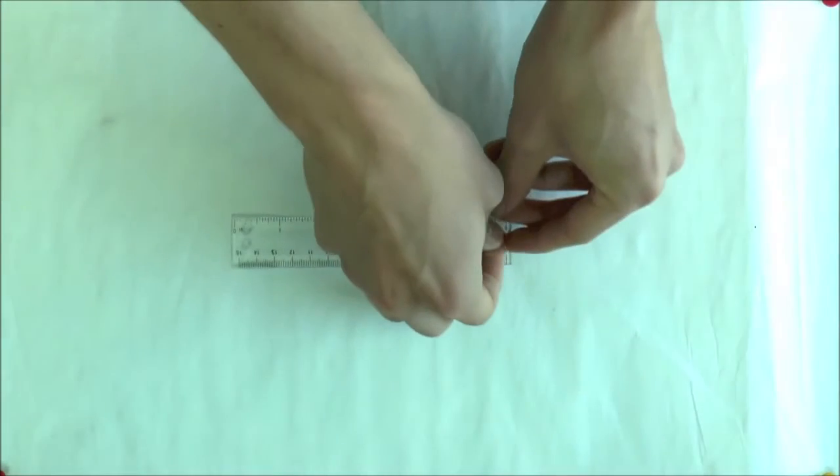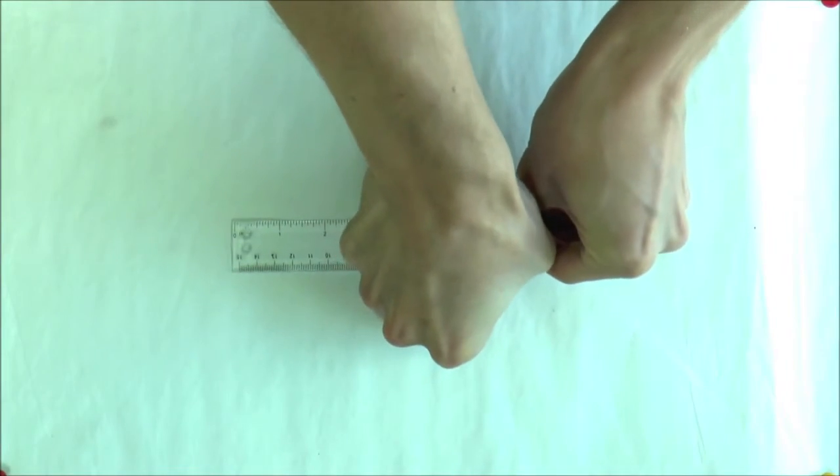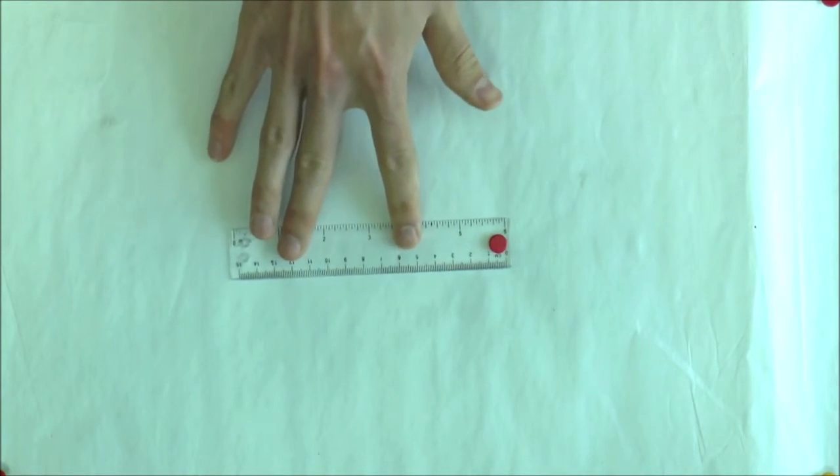Imagine sticking a nail into one end of the ruler. It can no longer spatially translate, but the nail still allows it to rotate.